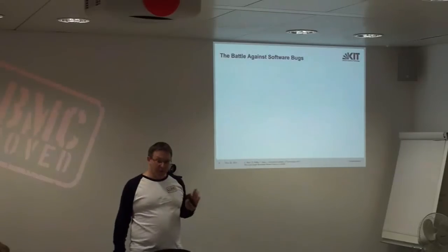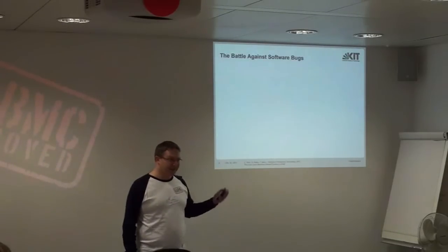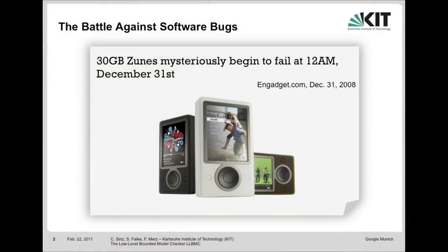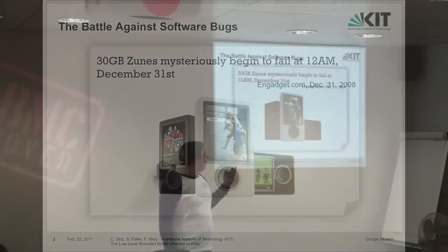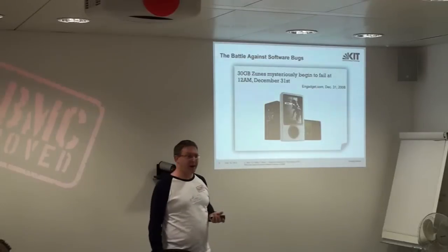Let's start with a very general problem: the battle against software bugs. I want to give some examples of how software bugs turned out in realistic scenarios and what some people suggested about how to deal with them. The first example is from the end of 2008 about mobile devices, specifically the Microsoft media player Zune. On 31st December 2008, all of those 30-gigabyte Zune devices suddenly stopped working — if switched off, you could not start them again. Many people wanted to use their devices on New Year's Eve to play music at parties, and the devices didn't work.